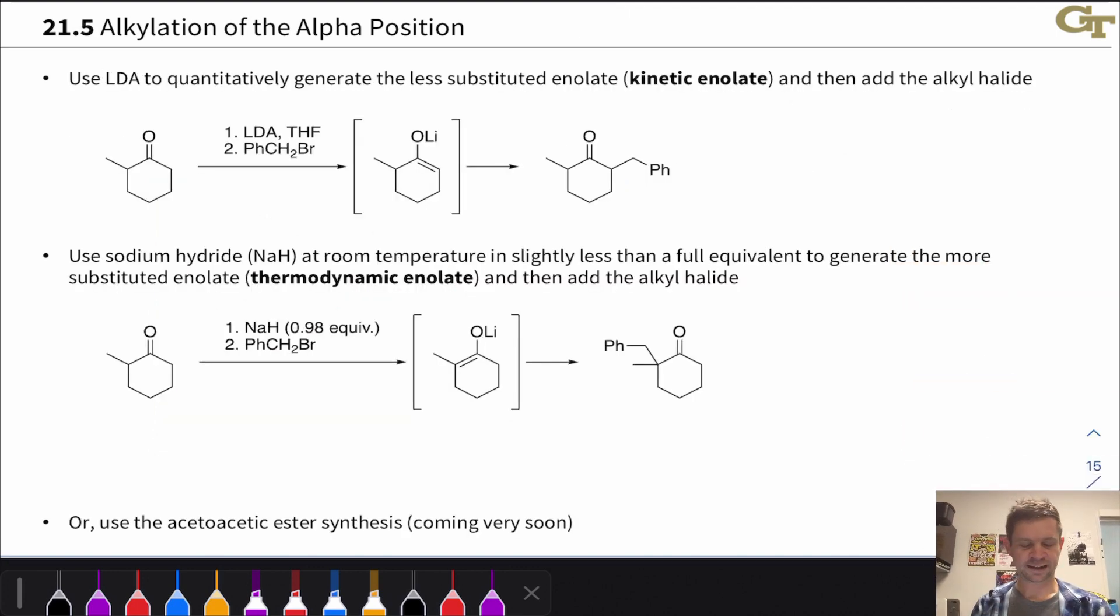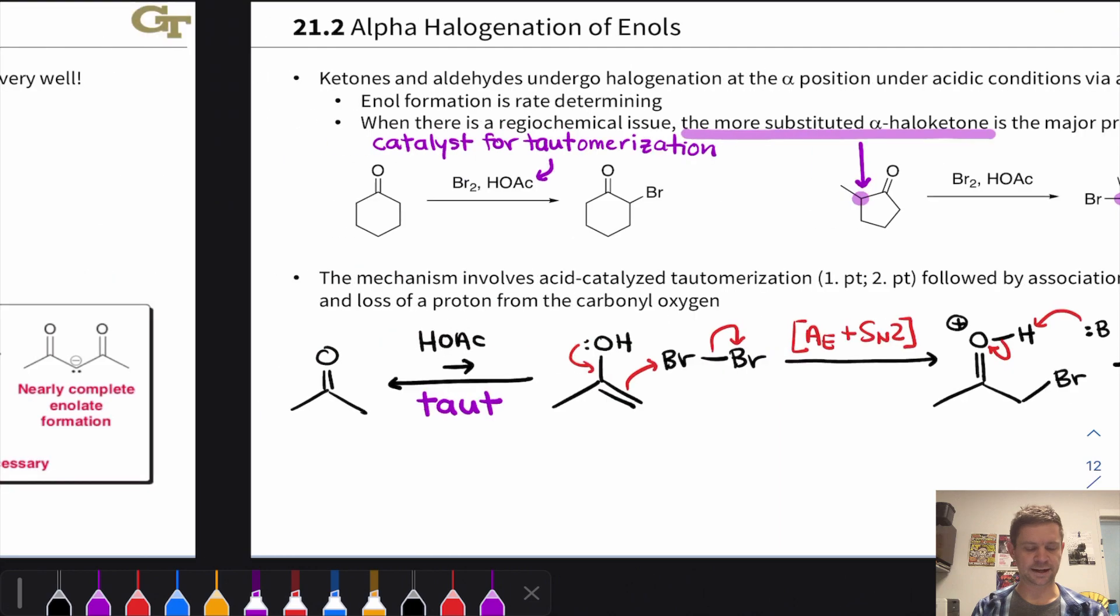We touched on this a bit on the last slide, but this slide really hammers home how to selectively generate the kinetic enolate or the thermodynamic enolate, what reaction conditions to use to get ideally quantitative or close to quantitative, close to 100% yield of our desired enolate. The kinetic enolate, I think, is a bit easier to understand. We just use LDA, which is a strong, very strong base, to quantitatively generate the less substituted enolate.